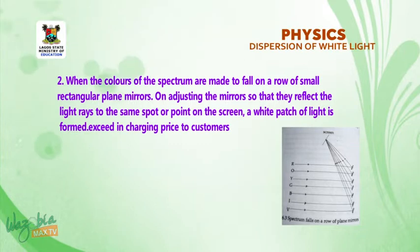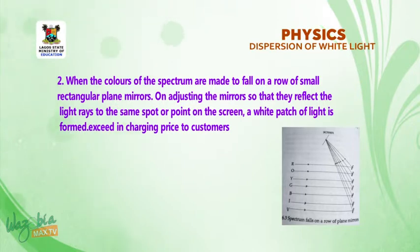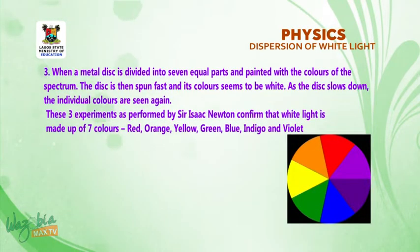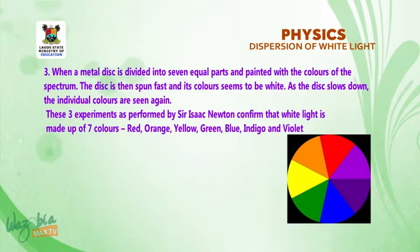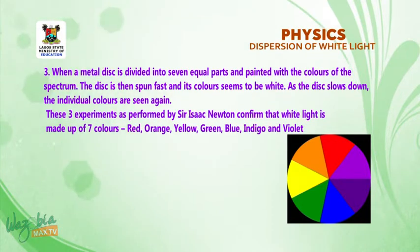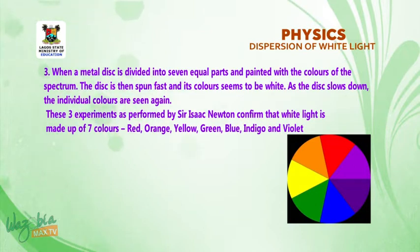Two, when the colors of the spectrum are made to fall on a row of small rectangular plane mirrors, and adjusting the mirrors so that they reflect the light rays to the same spot or point on the screen, a white patch of light is formed. Three, when a metal disc is divided into seven equal parts and painted with the colors of the spectrum, the disc is then spun fast and its color appears to be white. As the disc slows down, the individual colors are seen again. These three experiments, as performed by Sir Isaac Newton, confirm that white light is made up of seven colors.